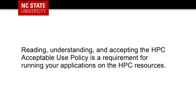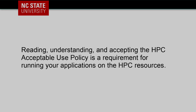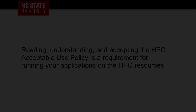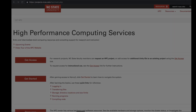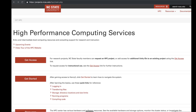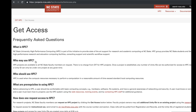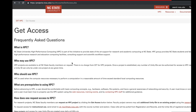Reading, understanding, and accepting the HPC Acceptable Use Policy is a requirement for running your applications on the HPC resources. You can find the AUP by going to the HPC website, clicking Get Access, and scrolling to the bottom of the page.